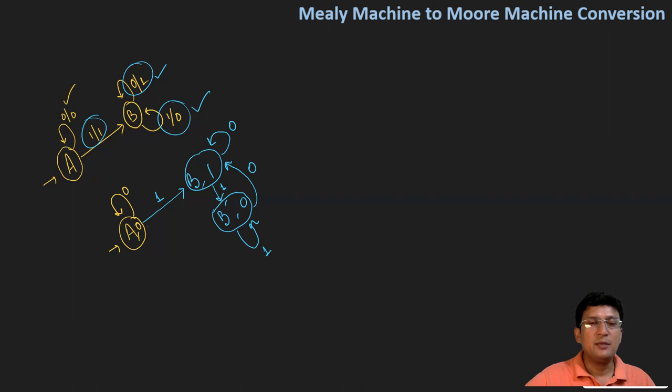This completes the Moore machine for the given Mealy machine. Let's draw the state transition table. A and B are two states, with A as the initial state. The input symbols are 0 and 1, and the output symbols associated with different states will be shown. Since I'm taking another state B dash, that should also be included in the table.